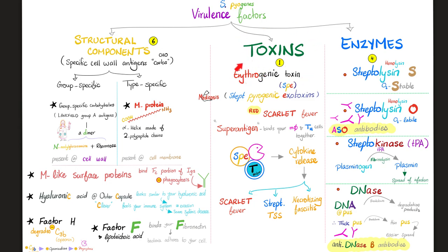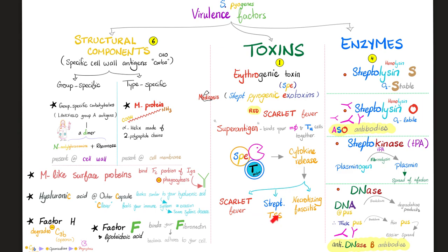The famous toxin is erythrogenic toxin — the new sophisticated name is streptococcal pyrogenic exotoxin, because pyro means heat, i.e., fever. This is a superantigen — it binds your macrophage and your T-helper lymphocytes together, causing a cytokine storm release. This is the pathogenesis behind scarlet fever, streptococcal toxic shock syndrome (not to be confused with staphylococcal toxic shock syndrome), and necrotizing fasciitis.